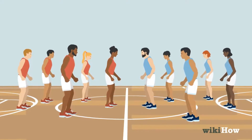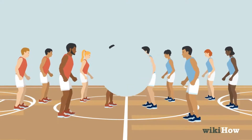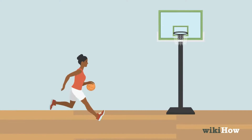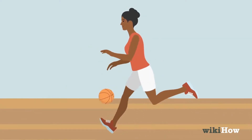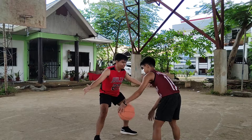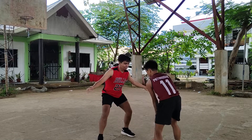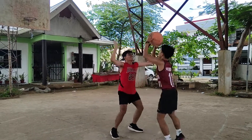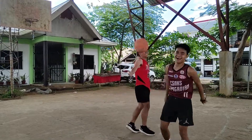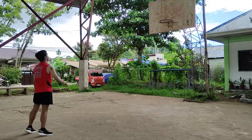Good morning everyone, this is RJ and this is How To Play Basketball. Basketball is a two-team 5v5 sport that has the end goal of scoring as many points as possible on the opponent's hoop before the game ends. In playing basketball, it is necessary to practice these three essential skills, which are passing, dribbling, and shooting.